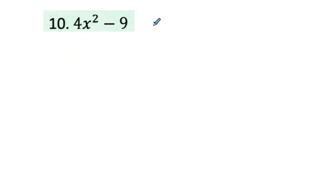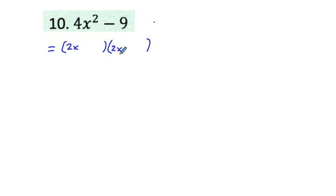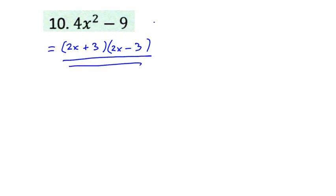Number 10: 4x² - 9. This is a difference of squares. The square root of 4x² is 2x, and the square root of 9 is 3. So we place 2x in each factor with plus and minus 3, giving us (2x + 3)(2x - 3). That's all ten exercises.